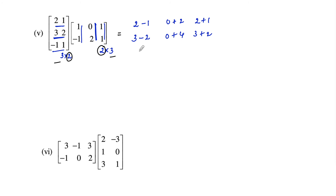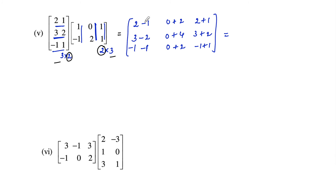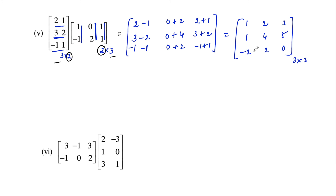Third row with first column: negative 1 into 1 is negative 1, plus 1 into negative 1 is negative 1. Third row with second column: negative 1 into 0 is 0, plus 1 into 2 is 2. Third row with third column: negative 1 into 1 is negative 1, plus 1 into 1 is 1. So the result is: 2 minus 1 is 1; 0 plus 2 is 2; 2 plus 1 is 3; 3 minus 2 is 1; 4 and 5; minus 1 minus 1 is minus 2; 0 plus 2 is 2; minus 1 plus 1 is 0. The product is the 3 by 3 matrix [1, 2, 3; 1, 4, 5; −2, 2, 0].